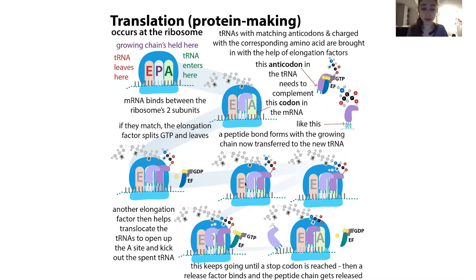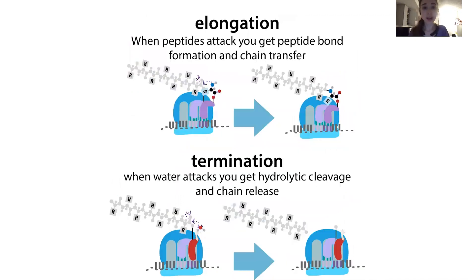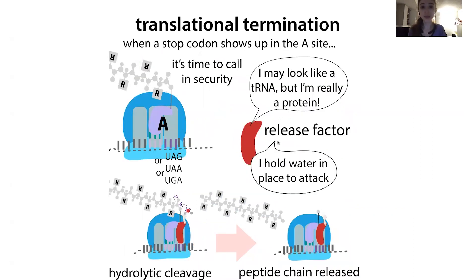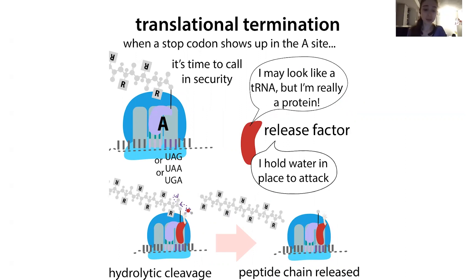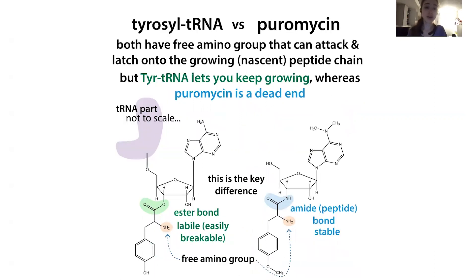This keeps happening over and over until you reach a termination signal — a stop codon. At the stop codon, a release factor comes in and binds into the A site, causing the chain to get released. But what happens if something that's not a tRNA binds? What happens if something that looks like a tRNA binds but isn't? This is what happens in the case of puromycin.